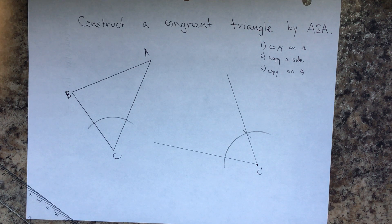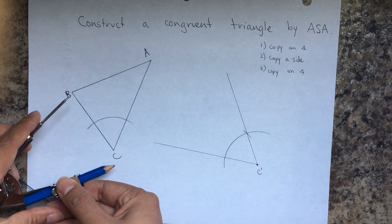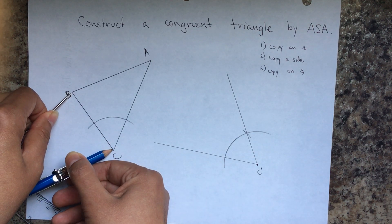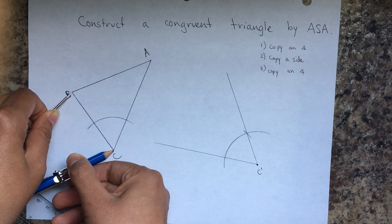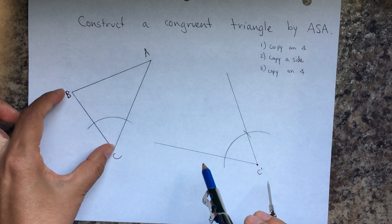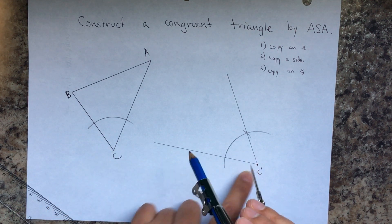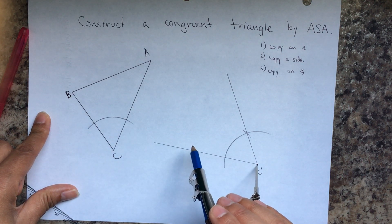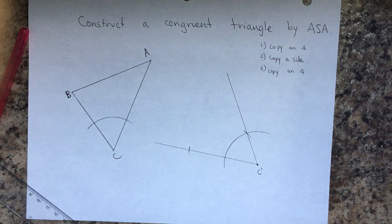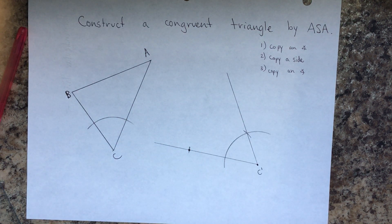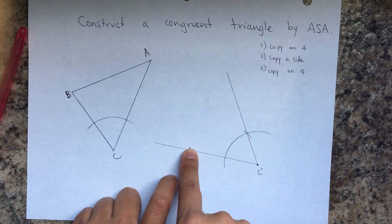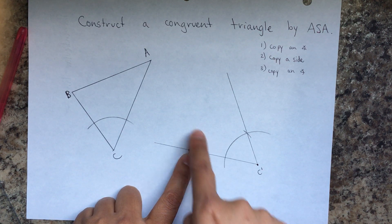Remember, the side has to be included in the two angles. I'm going to choose side BC. I take its measurement — that gives me C prime — and to find B prime, all I have to do is copy that side and mark it. That's my side, so I already have angle side.